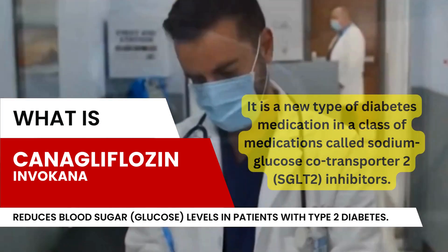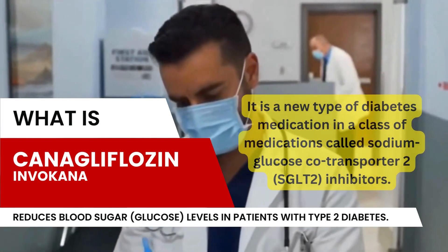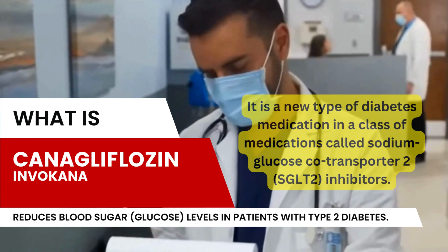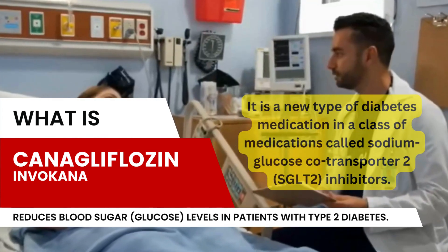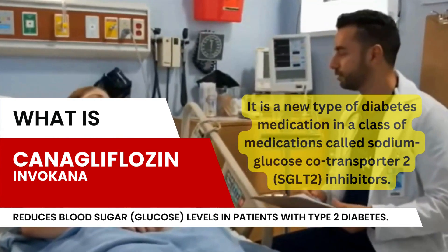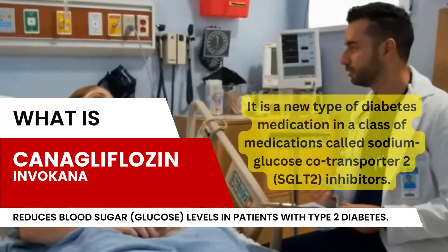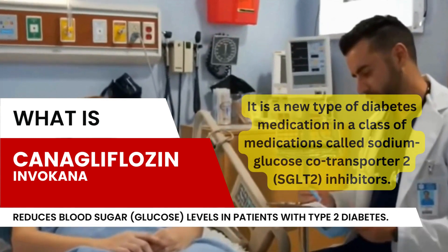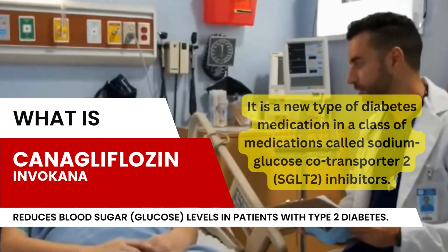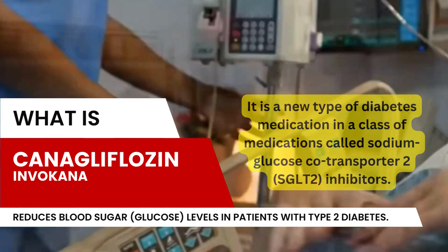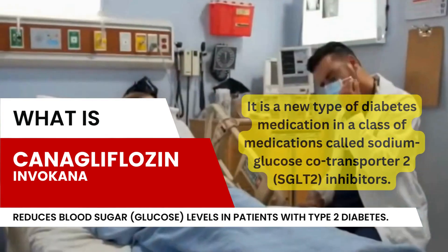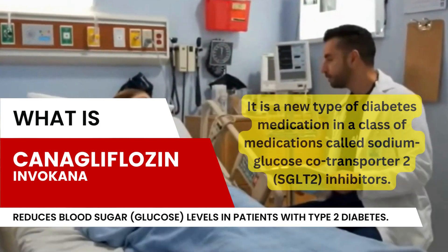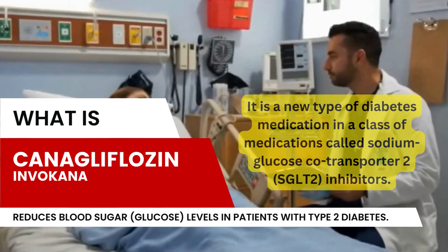Under normal conditions, glucose is filtered out of the blood and into the kidney tubules as blood passes through the kidneys. The glucose then is absorbed from the tubules back into the blood so that glucose is not lost in the urine. SGLT2 is an enzyme in the kidney tubule that causes glucose to be reabsorbed from urine.